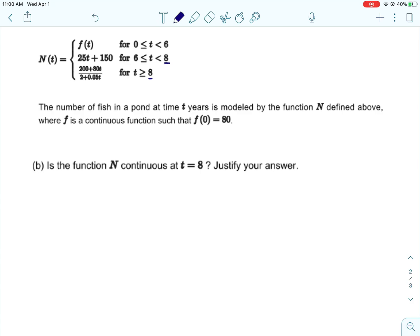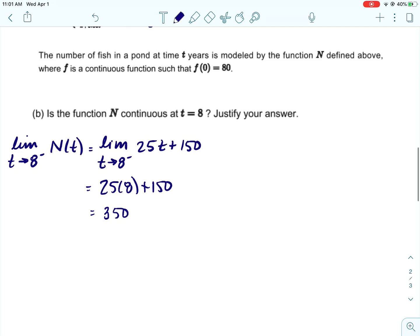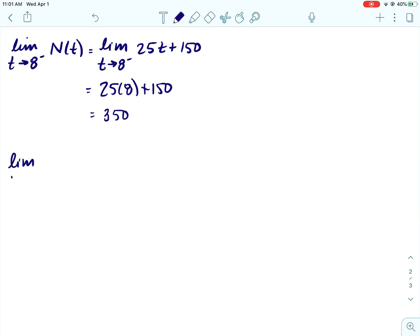The next one, we're going to determine if N is continuous at t equals 8. Now 8 is like an endpoint of two of our intervals, and so we want to know if they are connected, and that would make it continuous. So we would have to use limits. We would need to find the limit as t approaches 8 from the left of N(t). If we're approaching 8 from the left, we are going to use this function. This function doesn't have anything weird happening at 8, so we can just go ahead and plug in our 8, and we get 350.